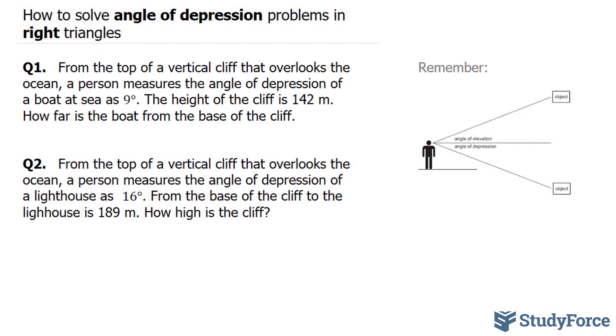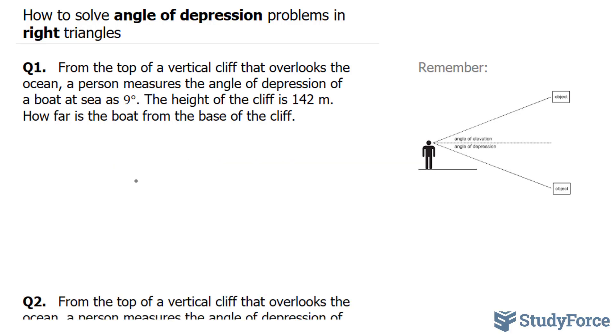We'll start off by drawing a diagram of what's been described. So what we have is a cliff. Picture this as a cliff, and there's a person standing at the edge of the cliff, and they are overlooking the cliff at an angle of depression of 9 degrees to a boat that's far away.